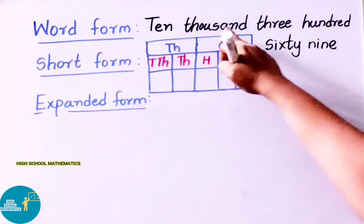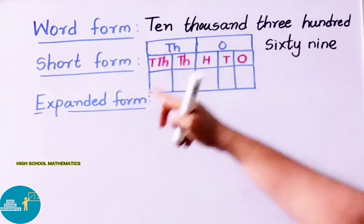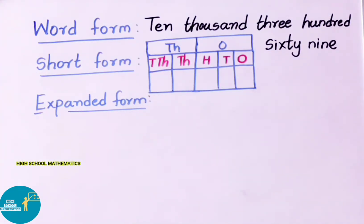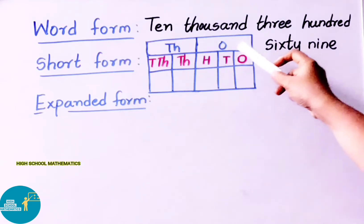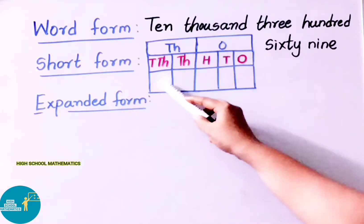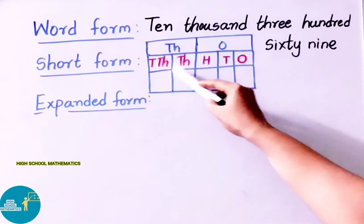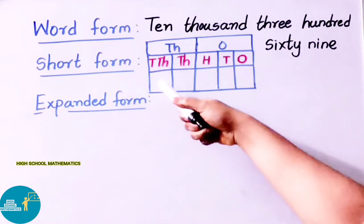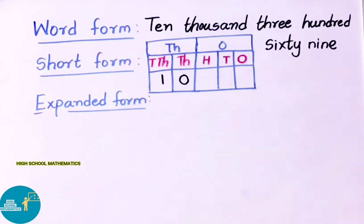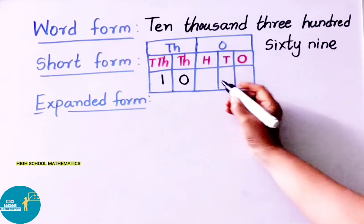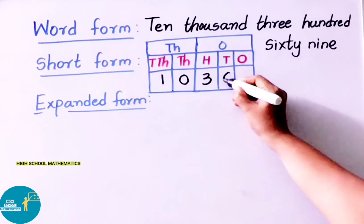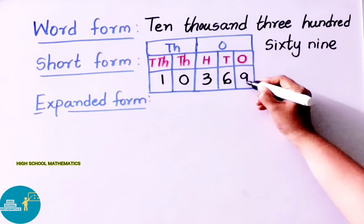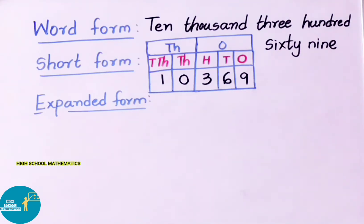The number is 10,369. First, we note the number name. We need places up to ten thousands. The places are: ones, tens, hundreds, thousands, ten thousands. In ten thousands place: 1; in thousands place: 0; in hundreds place: 3; in tens place: 6; in ones place: 9. So in short form, we write: 10,369 — with 10 in the thousands period and 369 in the ones period.